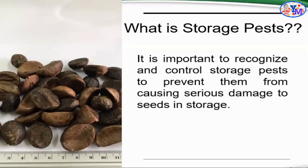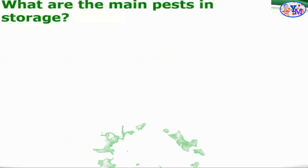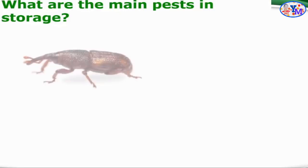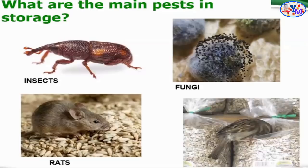Through recognizing and identifying the kind of insect pests or fungal organisms present, we can prevent damage and develop strategies to reduce or completely eradicate their population within the storage facility. The main storage pests found in a storage facility are: insects, fungal organisms, rats, and birds.